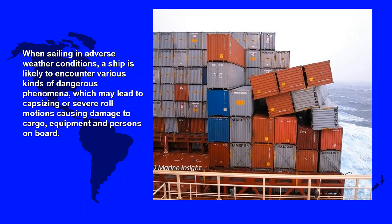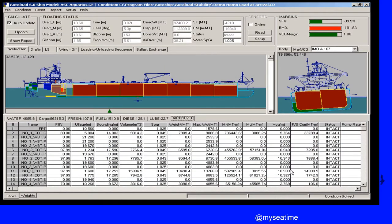When a vessel sails in adverse sea conditions such as heavy wind-induced waves or heavy sea swells, it is likely to encounter various kinds of dangerous phenomena which may lead to capsizing or severe roll motions, causing damage to cargo, equipment, and persons on board. The sensitivity of a ship to these dangerous phenomena depends on the actual stability parameters, hull geometry, ship size, and ship speed. On ships equipped with an onboard computer for stability evaluations using specially developed software — which takes into account main particulars, actual stability, and dynamic characteristics — such software must be approved by the flag state.